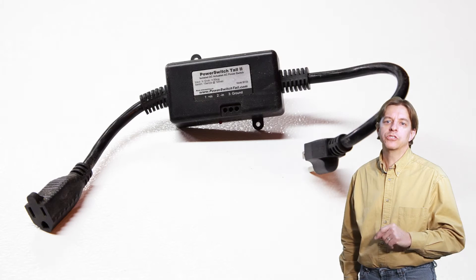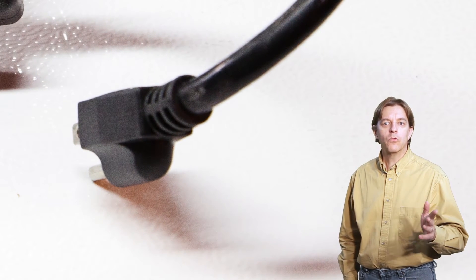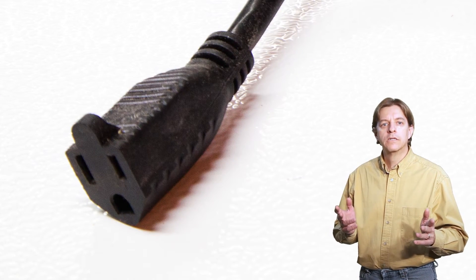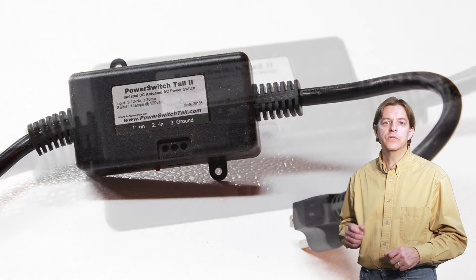At the core of how I made mine is a device called the PowerSwitch Tail. This is a short cord that looks very much like an extension cord. It has a plug on one end and an outlet on the other. What sets this apart from other extension cords is it has an electronically controlled switch built into it.